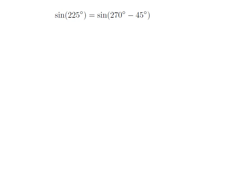As 225 degrees is equal to 270 degrees minus 45 degrees, so sine of 225 degrees is equal to sine of 270 degrees minus 45 degrees.